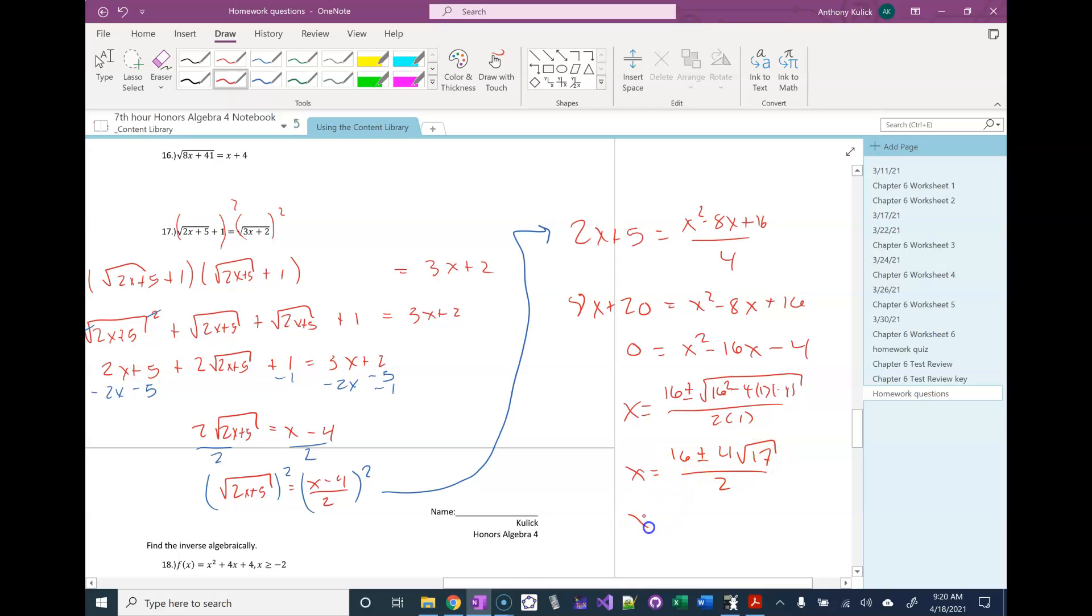And then if I reduce here, I get 8 plus or minus 2 square root of 17. But I'm not done. I still have to go back and check.